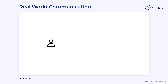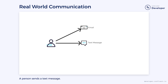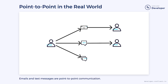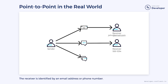Let's start with a quick analogy of communication in the real world. Digital communication has taken over our daily lives. Email, text messages, and social media posts dominate our day-to-day communication. We can think of text messages and emails as a type of point-to-point communication. Both have a designated sender and receiver, and the receiver is identified using a unique address or phone number.